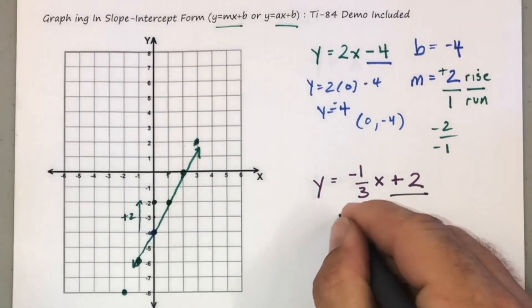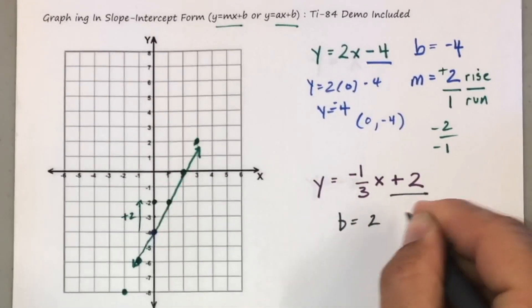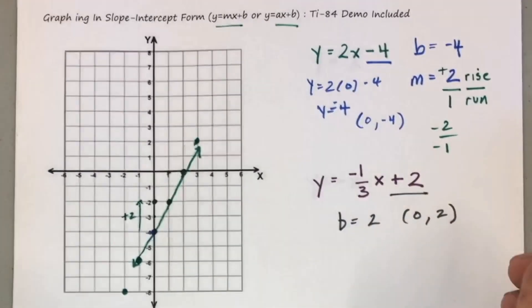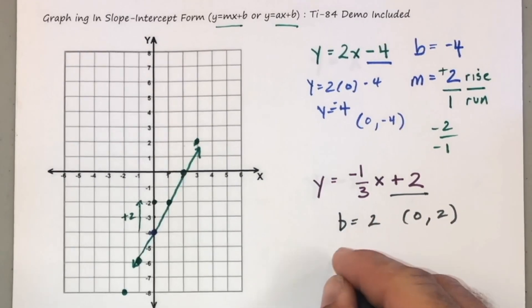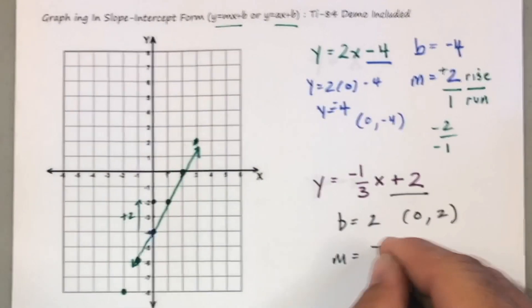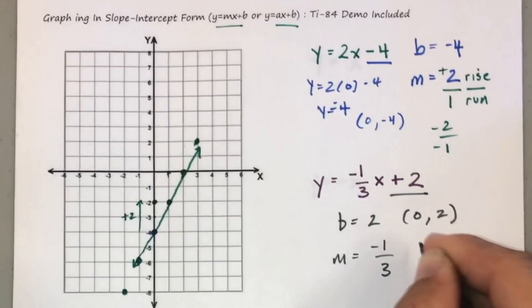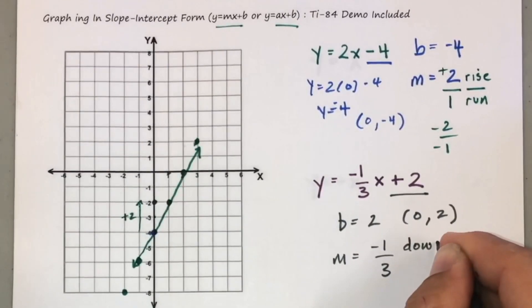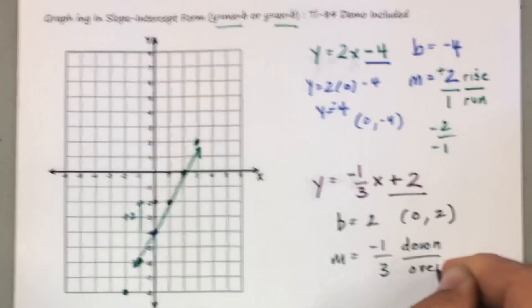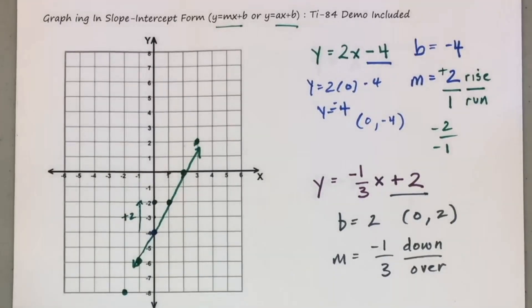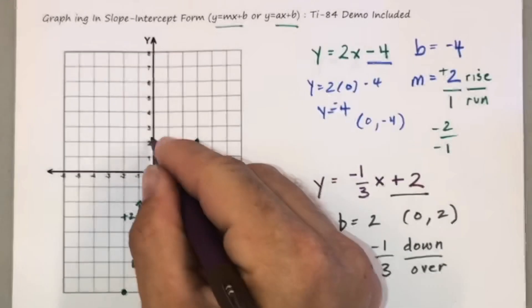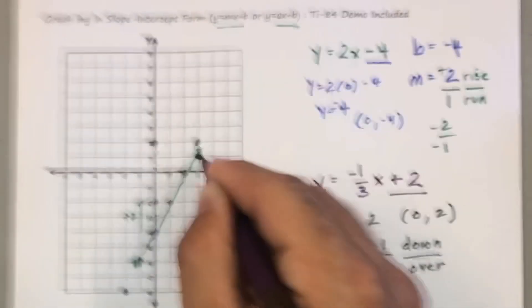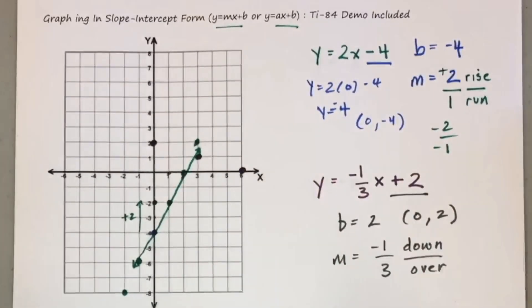Again, this number being my y-intercept, the coordinate which my line will cross my y-axis, this being my slope, and in this case, it is a negative slope, so I'm going to go down and over. So I'll start at two, and I'll go down one, over three, down one, over three.